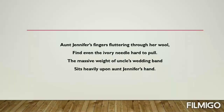In the second stanza: 'Aunt Jennifer's fingers fluttering through her wool' — fluttering means trembling. Aunt Jennifer's hands are shaking. 'Fingers fluttering' is an example of alliteration. 'Find even the ivory needle hard to pull' — she is embroidering tigers on a panel and even the small ivory needle is very difficult for her to pull. 'The massive weight of uncle's wedding band' — the uncle's wedding band symbolizes the dominating husband and the bondages of marriage. 'Sits heavily upon Aunt Jennifer's hand' — the ring sits heavily on her finger.